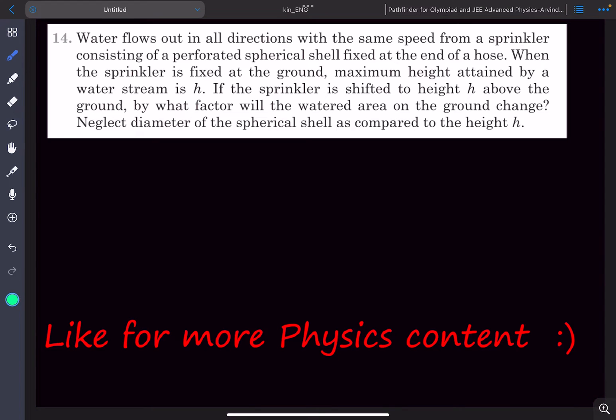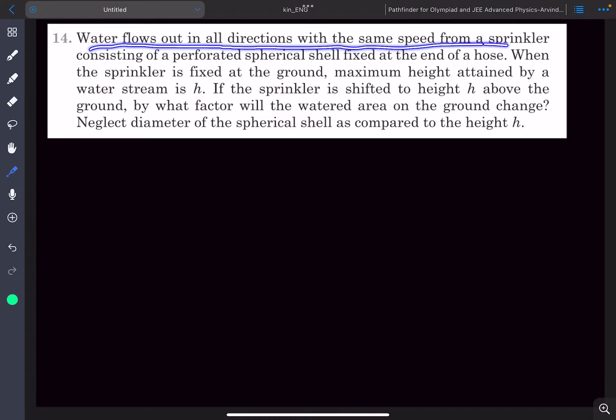Hey everyone, in this video we'll be solving a question from the topic of kinematics. The question is from the check your understanding section and says that water flows out in all directions with the same speed from a sprinkler consisting of a perforated spherical shell fixed at the end of a hose.